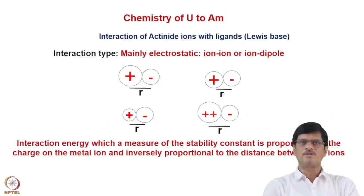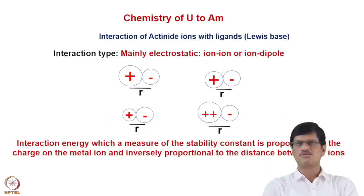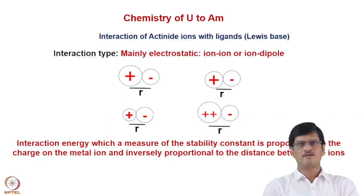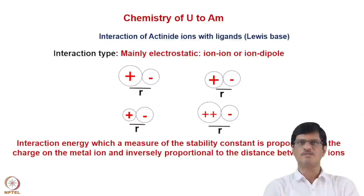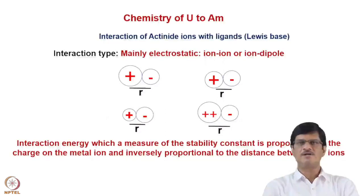When talking about the chemistry of actinides, we should also know about their complexation, that is the interaction of actinide ions with ligands, which are mostly Lewis bases. They interact with actinides mainly electrostatically, that is ion-ion or ion-dipole interactions. All actinide metal ions are cations; with neutral ligands we have ion-dipole interaction, and with anionic ligands it is ion-ion interaction. This interaction energy is a measure of the stability constant and is proportional to the charge on the metal ion, and inversely proportional to the distance between the ions.